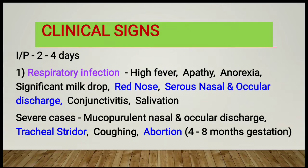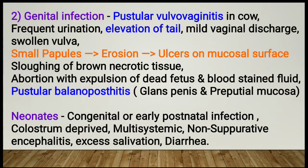Clinical signs appear in 2 to 4 days. The first form is the respiratory infection, in which high fever, apathy, anorexia, significant milk drop, red nose, serious nasal and ocular discharge, conjunctivitis, and salivation can occur. In severe cases, mucopurulent nasal and ocular discharge can occur, tracheal stridor sounds can be heard, and coughing and abortion occurs at 4 to 8 months of gestation.